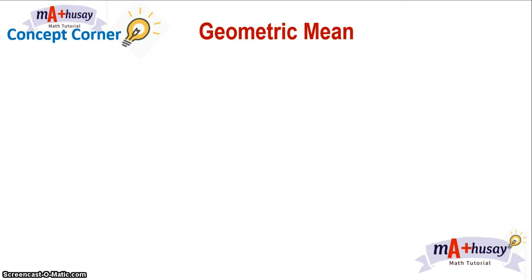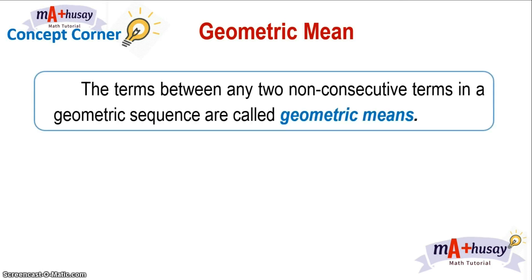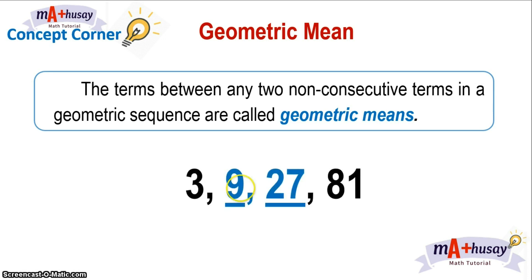What is a geometric mean? The terms between any two non-consecutive terms in a geometric sequence are called geometric means. For example, in the sequence 3, 9, 27, 81, the 9 and 27 are called geometric means — meaning, these are the terms in the middle of two non-consecutive terms.